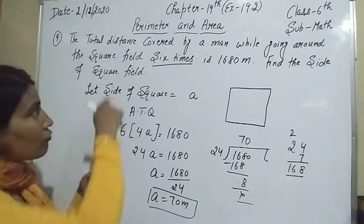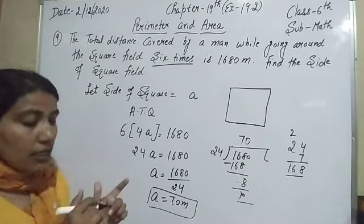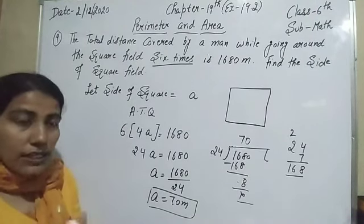The side of the square field is 70 meters. That is the answer to the ninth question. Now let us come to the next question of this worksheet.